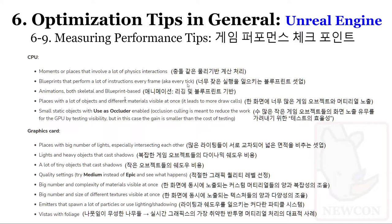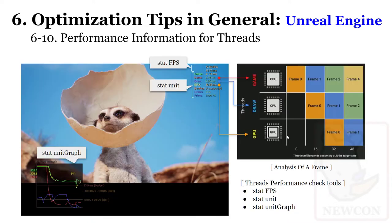라이팅과 섀도우를 동반한 파티클 시스템은 상당히 리소스를 많이 잡아먹습니다. 나무나 숲처럼 무성한 나뭇잎 효과도 GPU에 부하가 많이 걸리는 오브젝트 중 하나입니다. 실시간 그래픽스에서는 반투명 처리가 비효율적이기 때문에, 나뭇잎 같은 교차되는 많은 스프라이트들을 처리하는 데 상당히 부하가 많이 걸립니다.